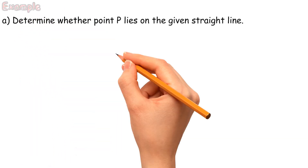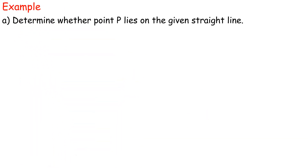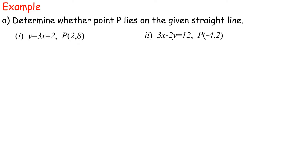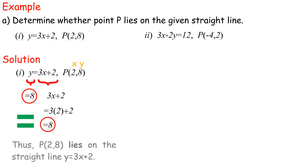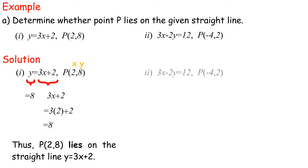Example a: Determine whether point P lies on the given straight line. 1. y equals 3x plus 2, P(2, 8). Left-hand side equals 8. Right-hand side equals 3 times 2 plus 2 equals 8. Both sides are equal. Thus P(2, 8) lies on the straight line y equals 3x plus 2.